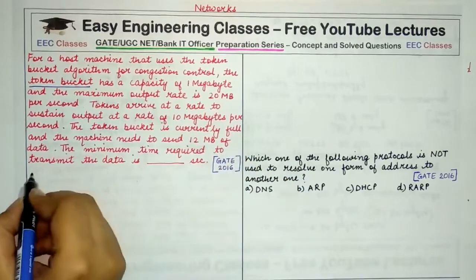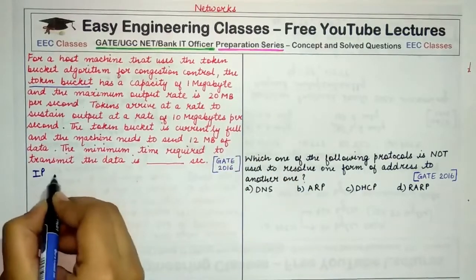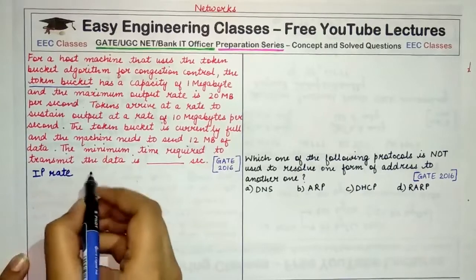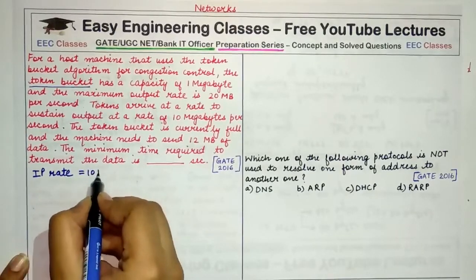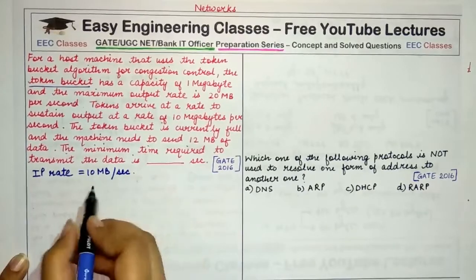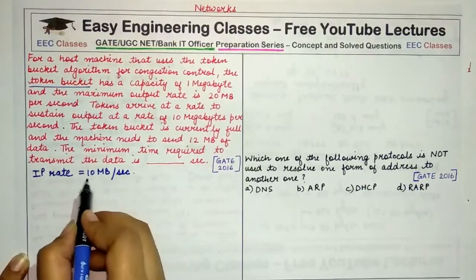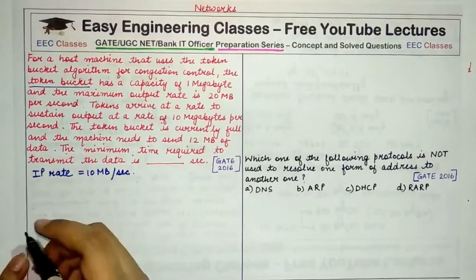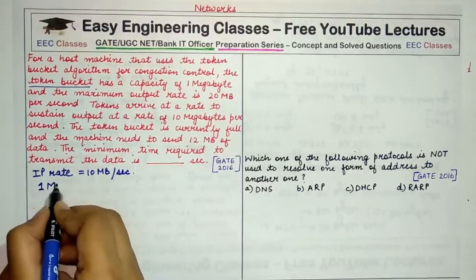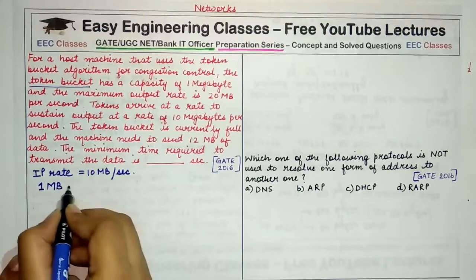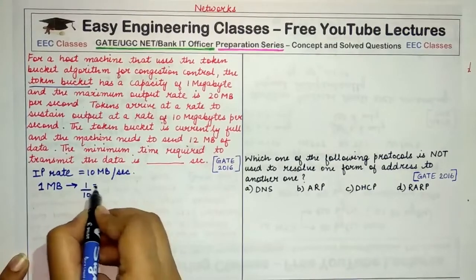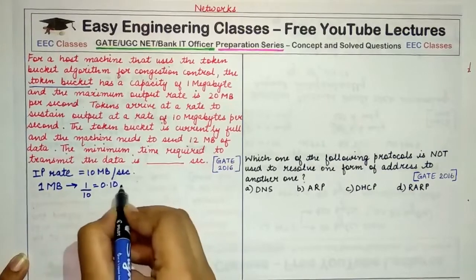It is given that tokens arrive at a rate of 10 megabytes per second, so the token arrival rate is equal to 10 MB per second. That means in 1 second, 10 MB of tokens arrive. So in how many seconds would 1 MB of tokens arrive? 1 MB of tokens would take 1 divided by 10, which is equal to 0.10 seconds.